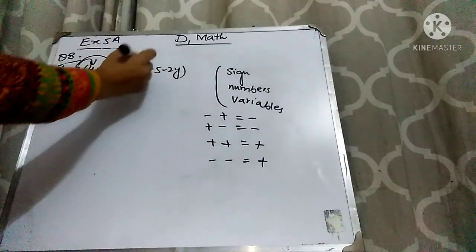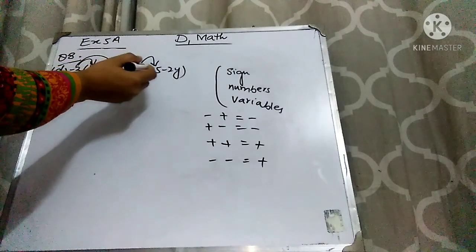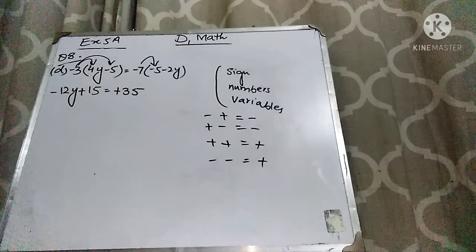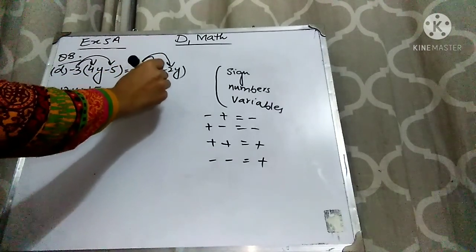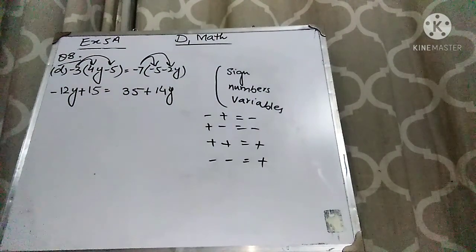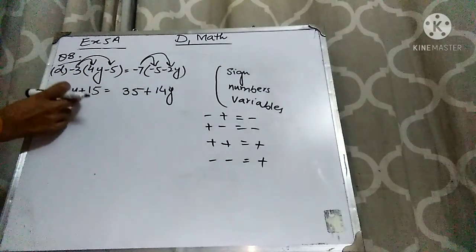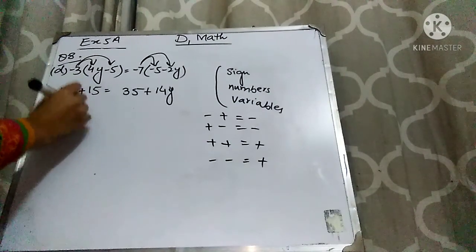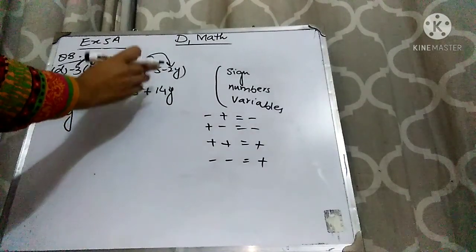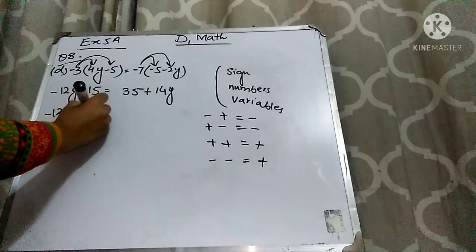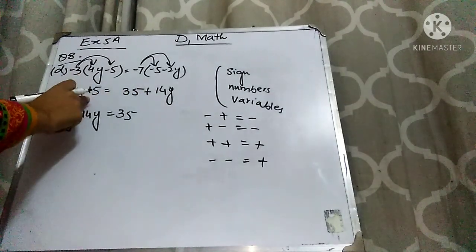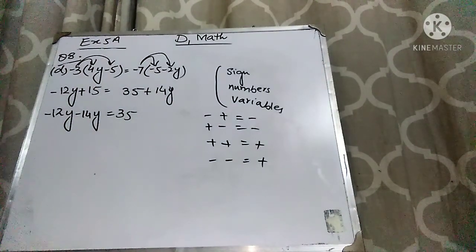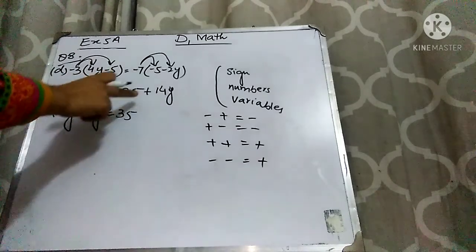Now multiply 7 with 2y: minus minus is plus, 2 sevens are 14y. The variable is y. Now keeping variables on one side and constants on the other. The variable already here is minus 12y — write it as is. The 14y is adding on the right hand side; when it comes to the left hand side it will subtract. The constant already on the right is 35. Moving 15 to the right hand side: 15 is adding here, so when it moves to the right hand side it will subtract.